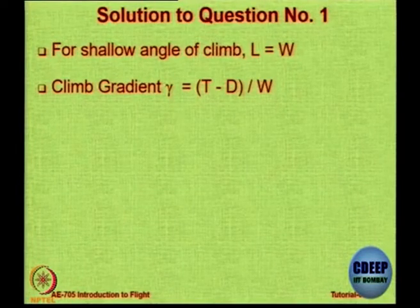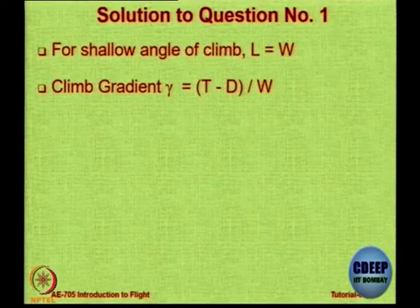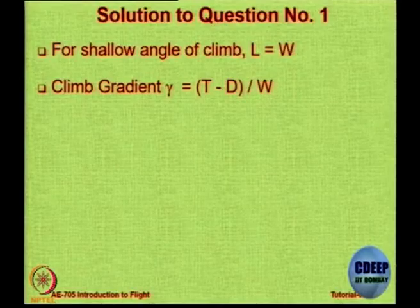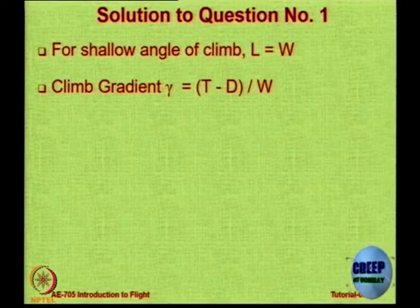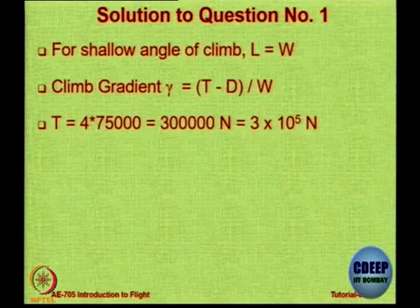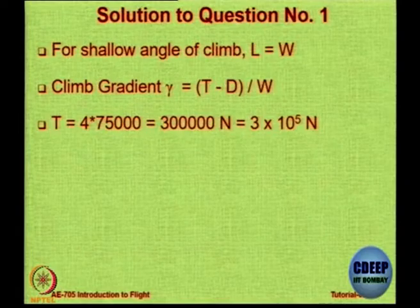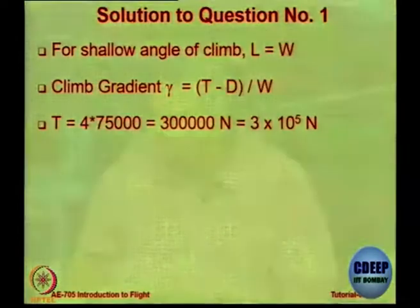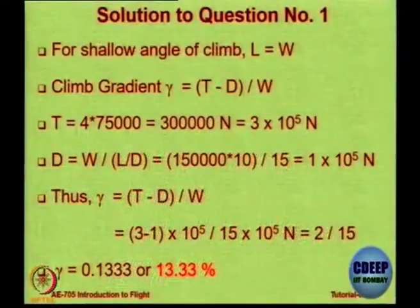Thrust is 4 into 75,000 Newtons. Drag will come from L/D because L equals W. The answer is 0.133, expressed as a percentage: 13.3%. So that is it. Is it clear?